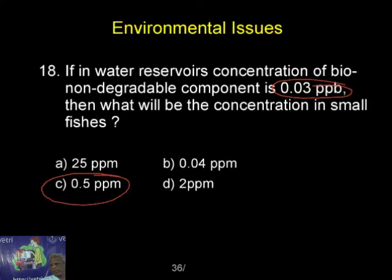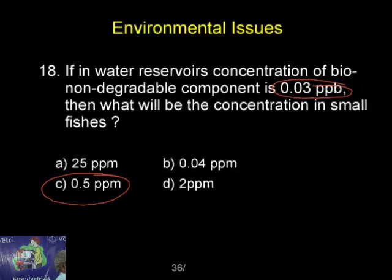In biology, this is what is called as bio magnification. When you get a particular amount of a non-degradable pollutant in air or in water, the animals — depending on that — it will be getting magnified. We now know that some non-degradable pollutants are found even in breast milk or mother's milk. It is getting magnified and magnified.